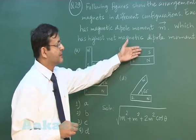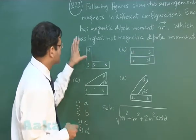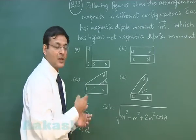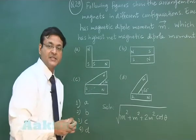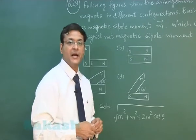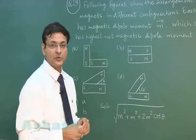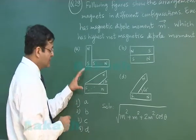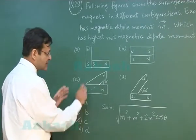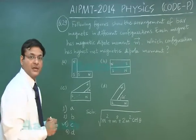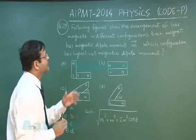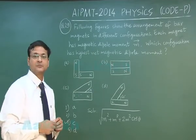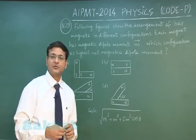Here the angle between these two moments is 180 degree, here it is 90 degree, here you have 30 degree, and here you have 60 degree. So if the value of theta is very low then the cos theta value will be high and the value of net moment will also be large. So I will be choosing option number 3, which is having lowest angle, that is 30 degree, and that will make maximum dipole moment. That is the answer to question number 29.